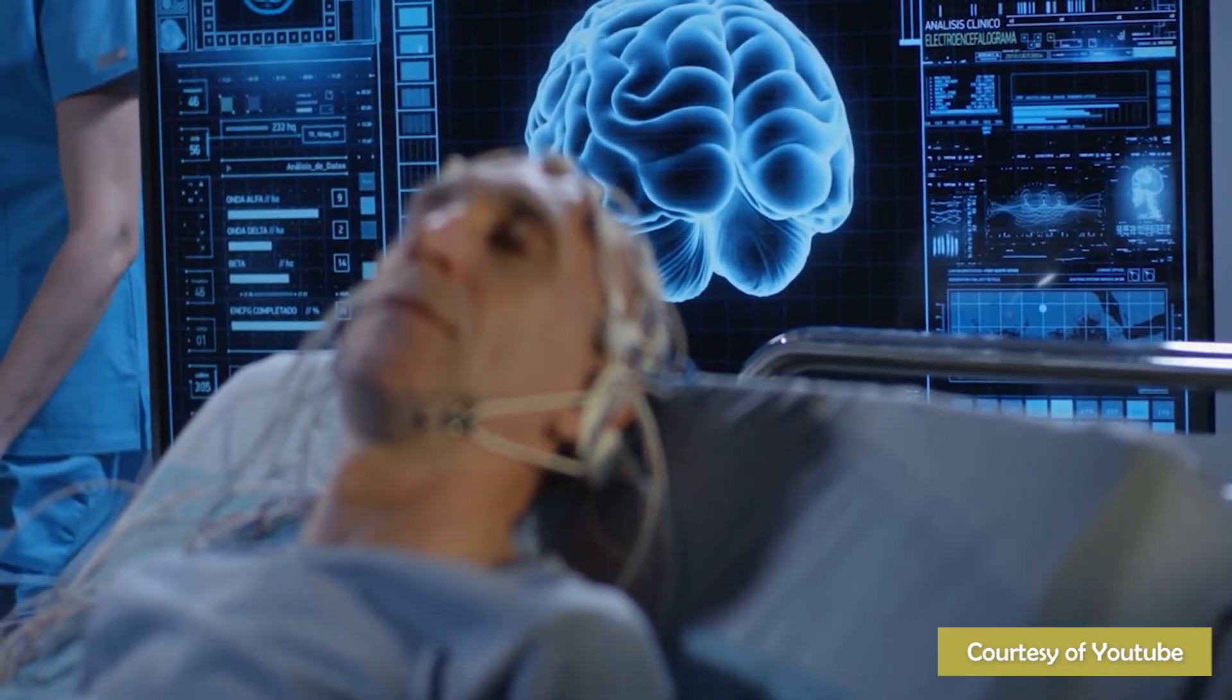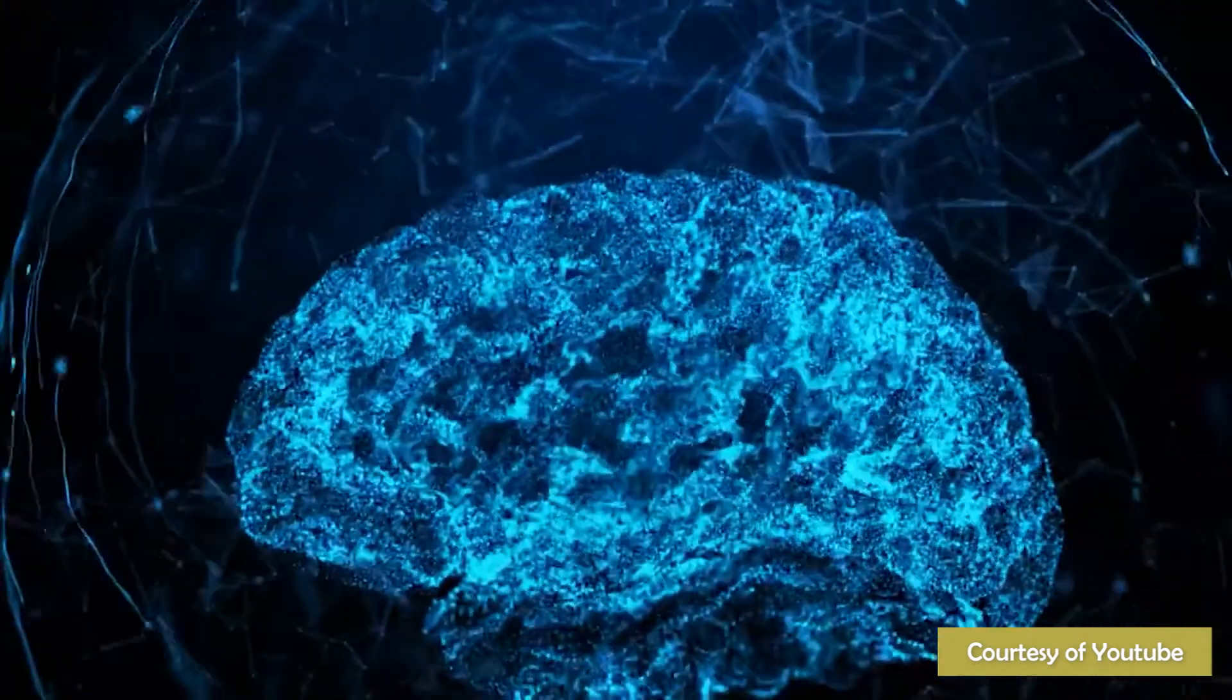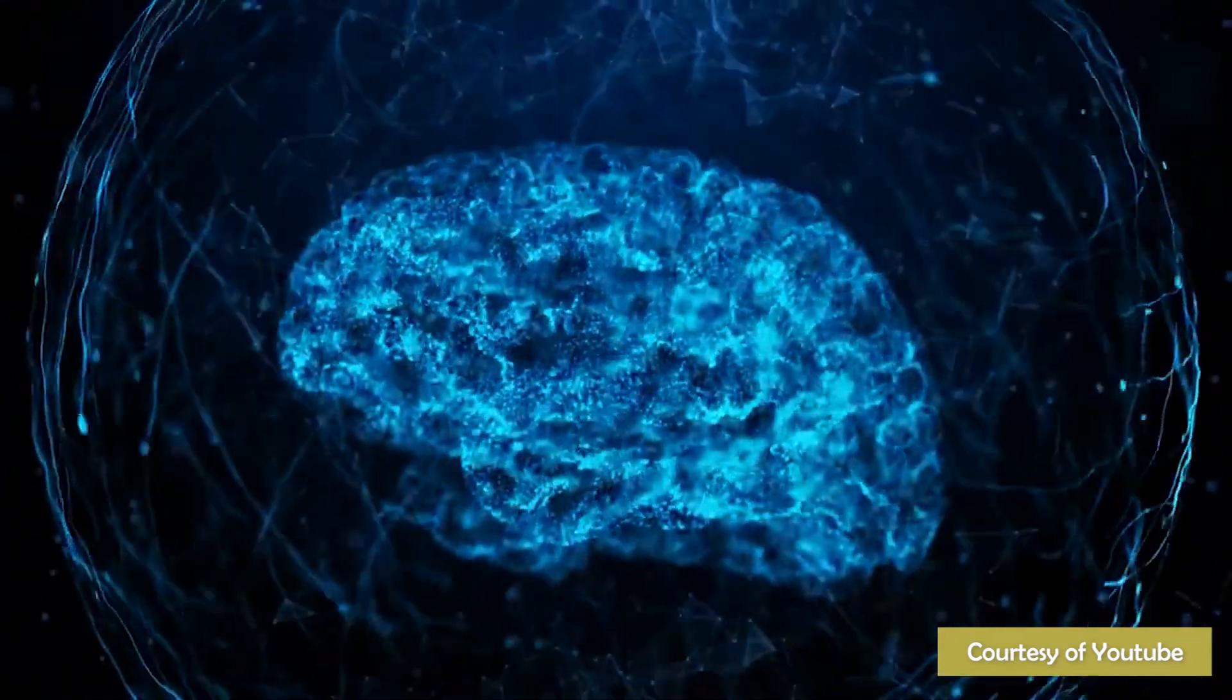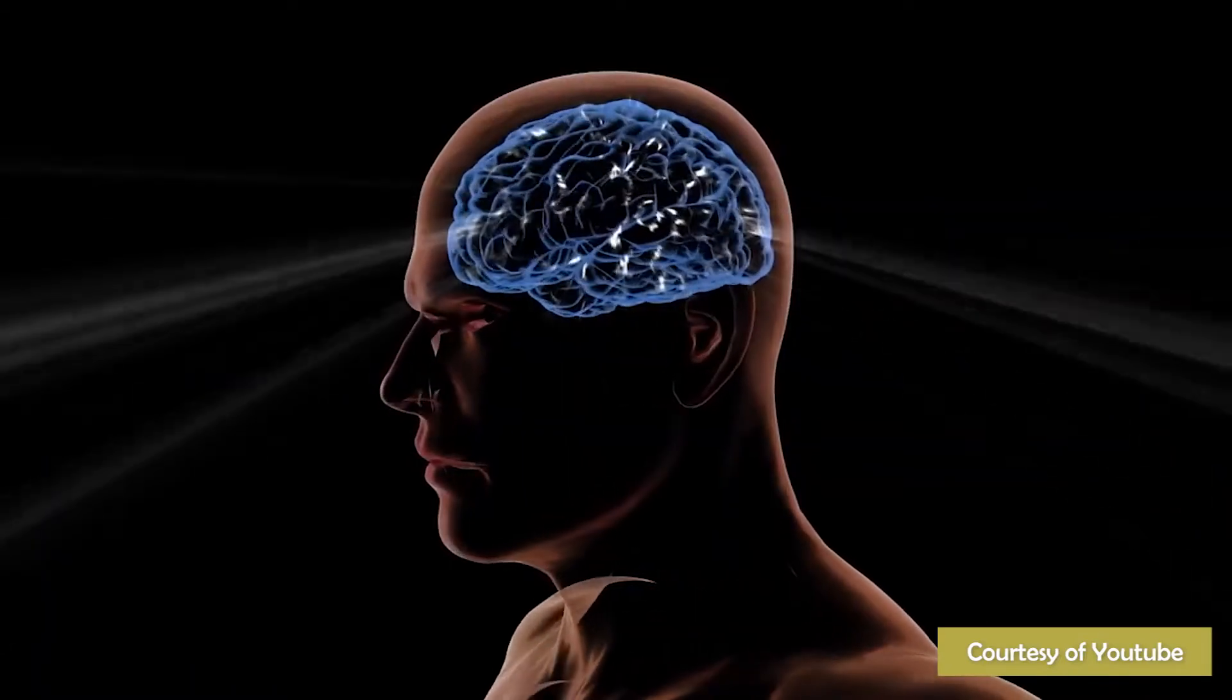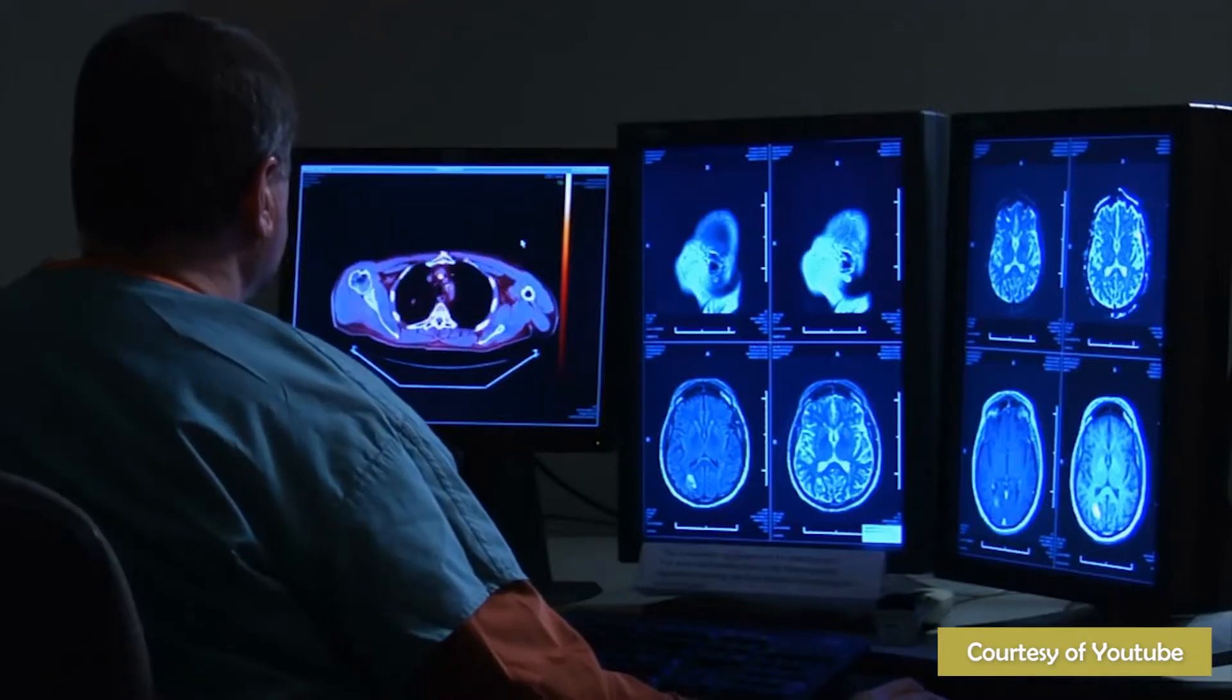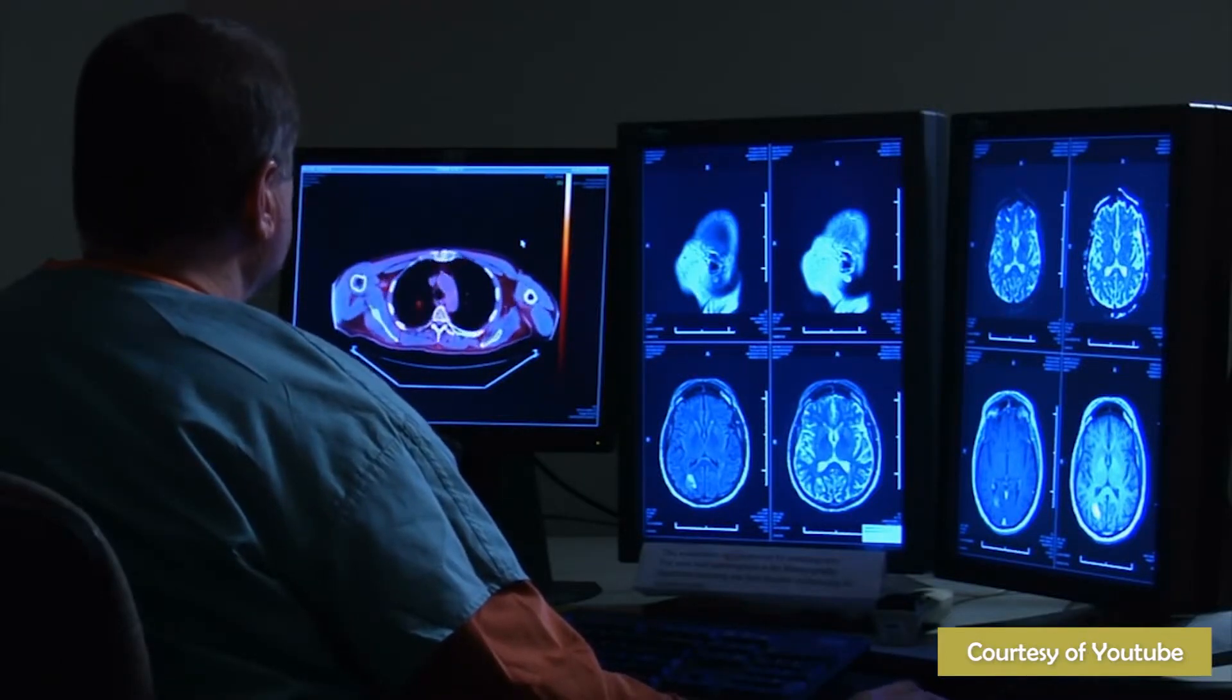To test so quickly in humans, the company would need to get an exemption from the normal multi-year regulatory process from the Food and Drug Administration. That may be possible. Other brain implants have received exemptions, but Neuralink's device could face additional challenges.